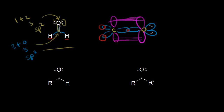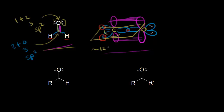Since the oxygen is sp2 hybridized, it also has an unhybridized p orbital. The pi bond comes from the side-by-side overlap of the p orbitals on carbon and oxygen. So in the double bond of formaldehyde, one bond is a sigma bond and one is a pi bond. Because the carbon is sp2 hybridized, all the atoms lie on the same plane with bond angles close to 120 degrees.